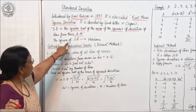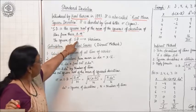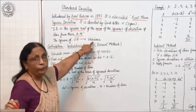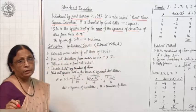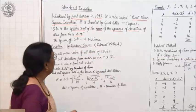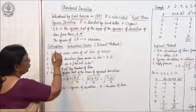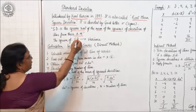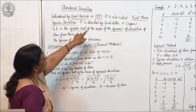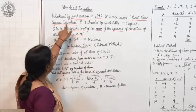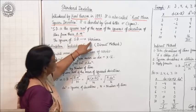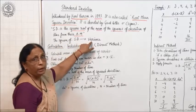The square of standard deviation is sometimes also called variance. Standard deviation is known as root mean square deviation, and the square of standard deviation is known as variance.